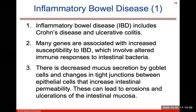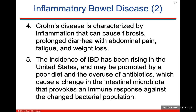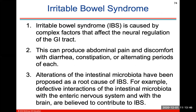Inflammatory bowel disease includes Crohn's disease and ulcerative colitis. Genes can be associated with it, and it may involve an altered immune response. There will be decreased mucous secretion and changes in tight junctions that increase intestinal permeability, leading to erosions and ulcerations in the intestinal mucosal lining. Crohn's disease is characterized by inflammation and can cause fibrosis, diarrhea, abdominal pain, fatigue, and weight loss. The incidence of inflammatory bowel disease has been rising and could be promoted by poor diet and overuse of antibiotics, which changes the intestinal microbiota and provokes an immune response.